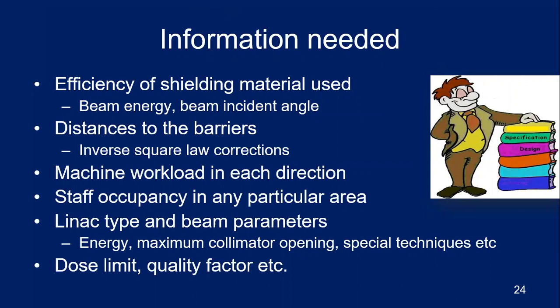To design a facility, you need a lot of information. This includes the efficiency of the shielding material with reference to beam energy and incident angle; distance to the barriers for inverse square law corrections; machine workload in each direction; staff occupancy; linear accelerator type and beam parameters including maximum collimator opening and special techniques such as TBI, IMRT, or SBRT; as well as the dose limit, dose equivalent, and quality factors.